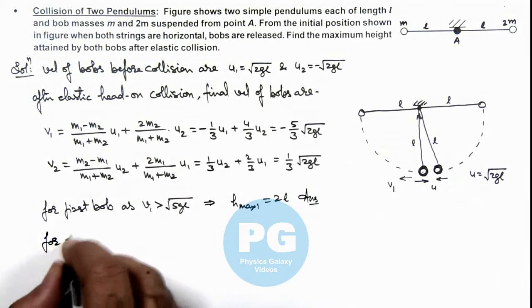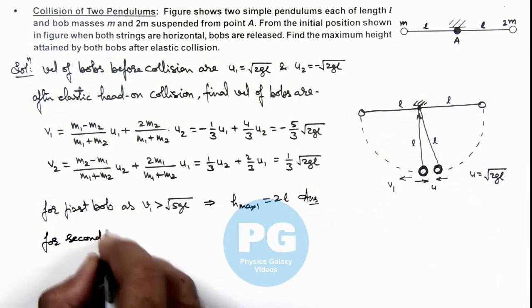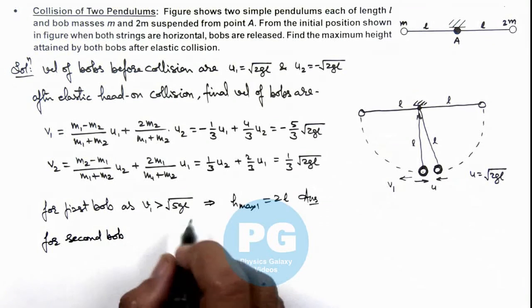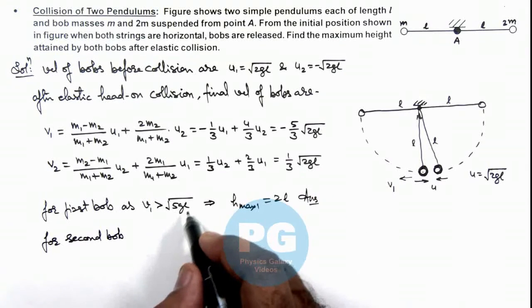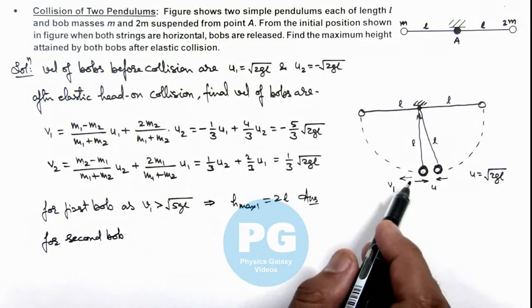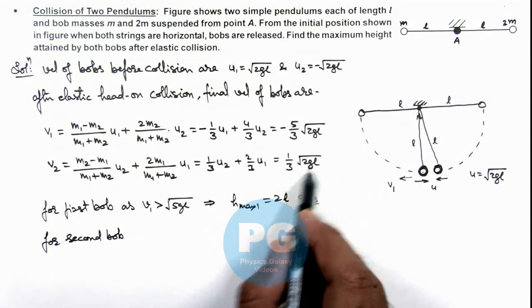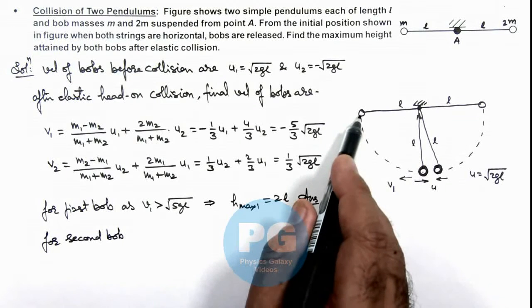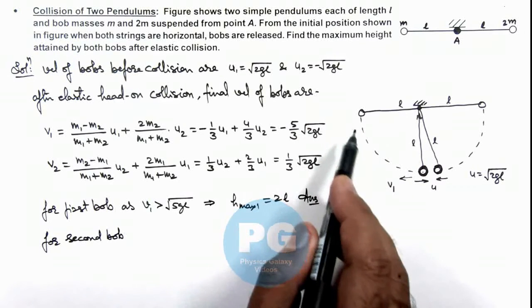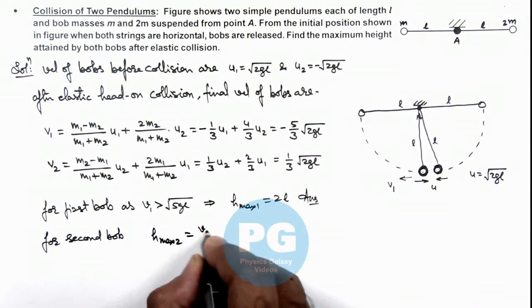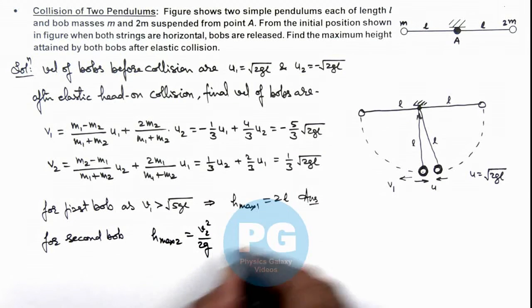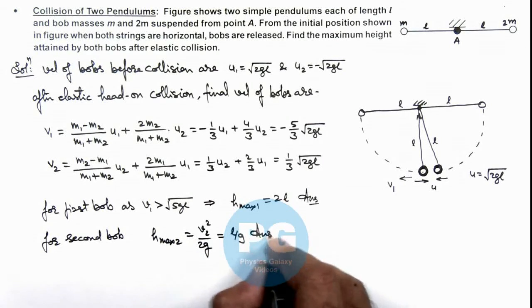Similarly for second bob, the value of v2 is 1 by 3 times root 2gl which is less than root 5gl. That means it will not be able to complete the circular motion. It is even less than root 2gl, means it will not be able to go above the initial position. So we can write h max for 2 is equal to v2 squared by 2g, which can be written as if we square it divided by 2g, this gives us l by 9. That is the second answer for this problem.